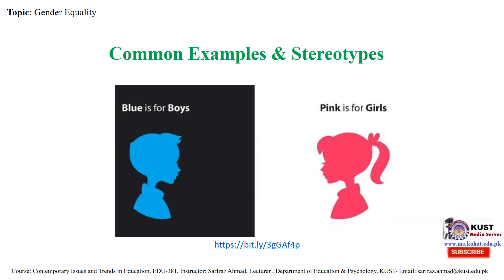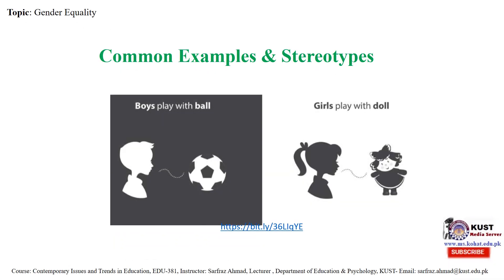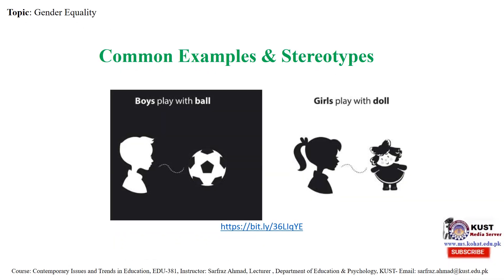Regarding dress codes, colors are assigned by gender — blue for boys and pink for girls. Another common example is that boys play with balls and girls play with dolls, showing that even the nature of interest and activity is considered quite different between genders.